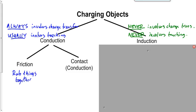For example, rub a balloon against your hair — two dissimilar materials. One of them will lose electrons and the other will gain electrons. The one that gains electrons becomes negatively charged; the one that loses electrons becomes positively charged. This is all governed by the law of conservation of charge: the total charge before rubbing was zero, and the total charge after is still zero, so if one becomes negative five, the other becomes positive five.